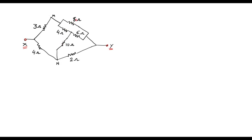Here we can observe that resistors 8Ω, 6Ω, and 4Ω are in delta fashion, whereas resistors 4Ω, 6Ω, and 10Ω are in star fashion. Either we can convert 4Ω, 6Ω, 10Ω (star) into delta, or 8Ω, 4Ω, 6Ω (delta) into star. I will convert 8Ω, 4Ω, 6Ω — which is in delta — into star.